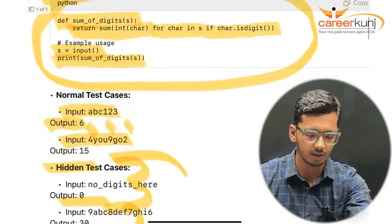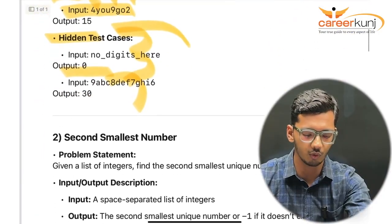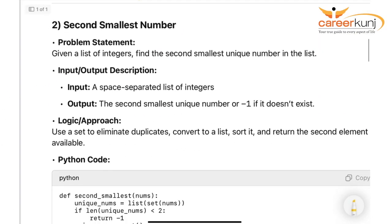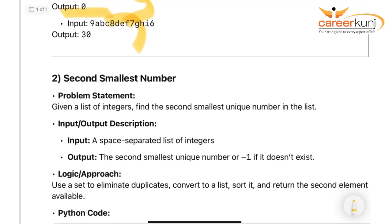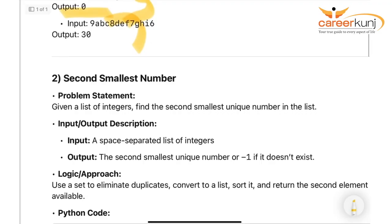Let's move to the second question: finding the second smallest number. Given a list of integers, find the second smallest unique number in the list. The key word here is 'unique' — even if the same number appears multiple times, it should only be counted once.